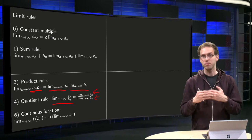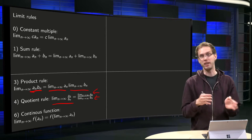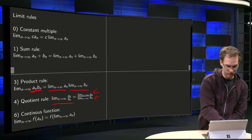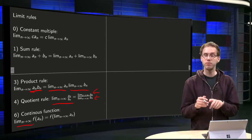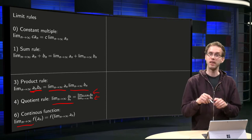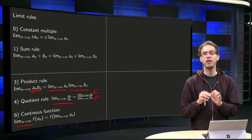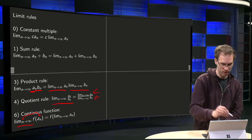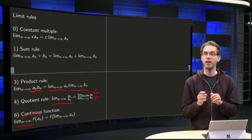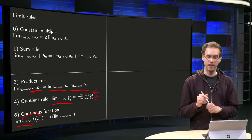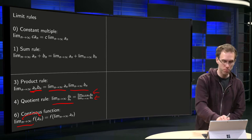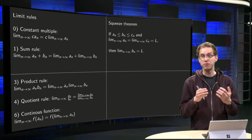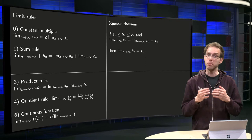And then, for continuous functions, you can take limits inside. So limit n to infinity of function of some sequence an, then you can take first the limit and then the function, so you can take the limit in, and you get the function in the limit n to infinity of an. So those are all completely the same as for limits of functions.